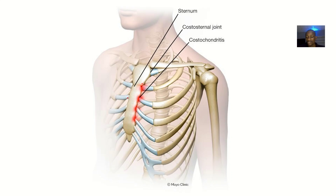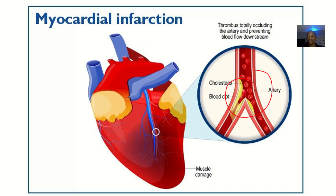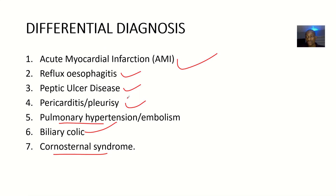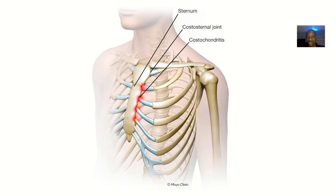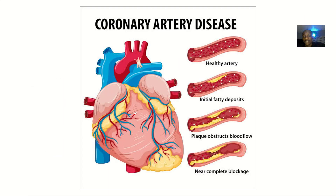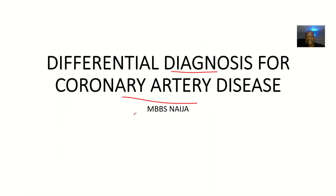It could also be costochondral syndrome — sorry, that was a typo. Costochondral syndrome means there's a fracture along the costal margin of the sternum. So I think these are the differential diagnoses for coronary artery disease — if it is not coronary artery disease, it could definitely be one of these others.